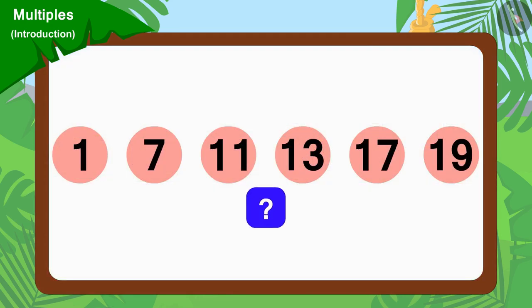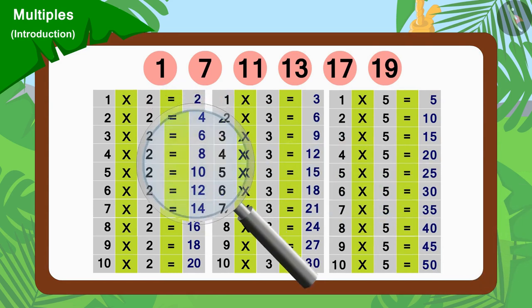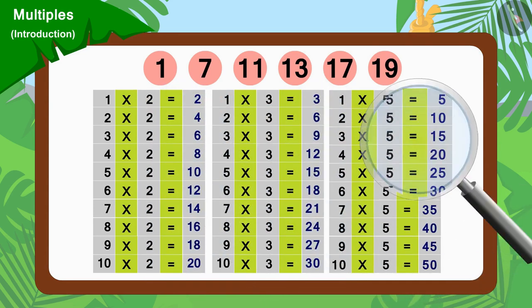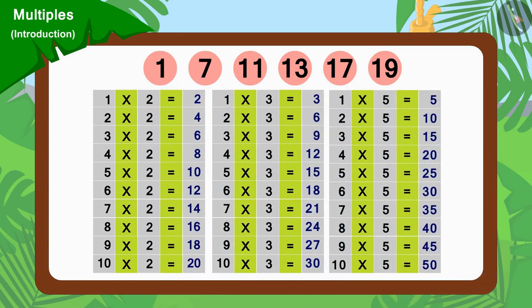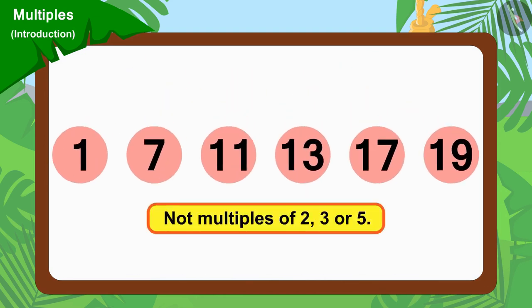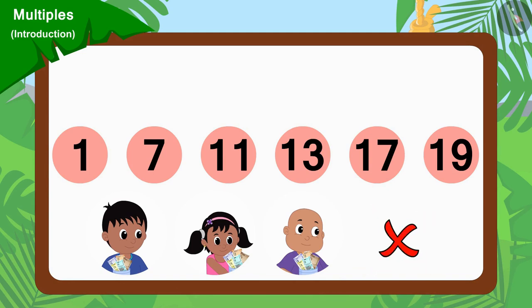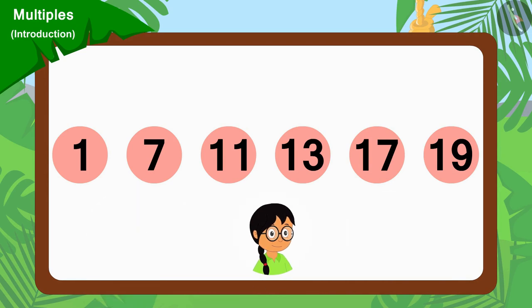But why did it happen? This is because these numbers cannot be divided by any of the numbers 2, 3 or 5. Therefore, we can say that these numbers are not multiples of 2, 3 or 5. As none of Raju, Pinky and Bablu were able to go to these houses, they took Meenu's help and asked her to collect donations from those houses.